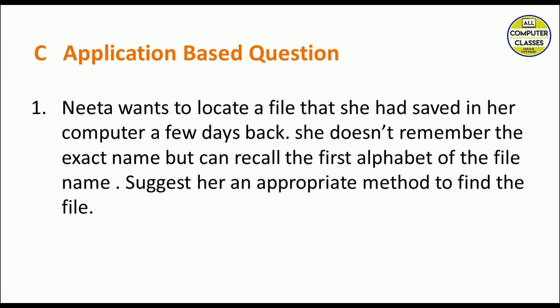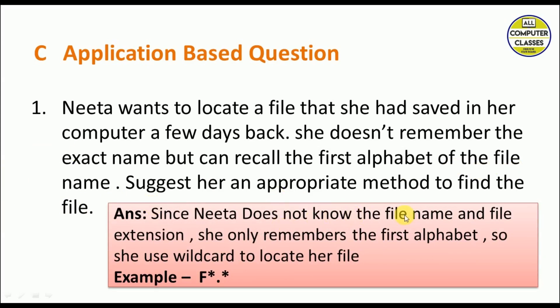Now application-based questions. Nita wants to locate a file that she had saved in her computer a few days back. She doesn't remember the exact name but can recall first alphabet of the file. She just remembers one alphabet of the file. Since Nita does not know the file name and file extension, she only remembers the first alphabet, so we will use the wildcard. Let's say the file name starts with F. F star dot star. We don't know the complete file name, so this star indicates that, and this star will indicate the file extension that we don't know. Any file extension, all the file names with alphabet F will be displayed, whether they are Excel, PowerPoint, MS Word, any file.